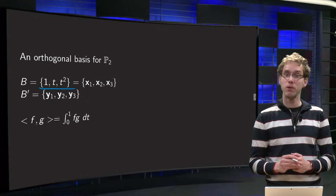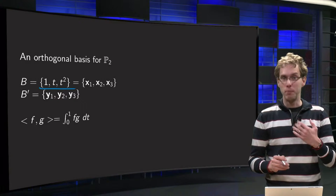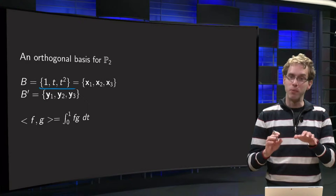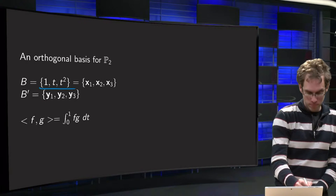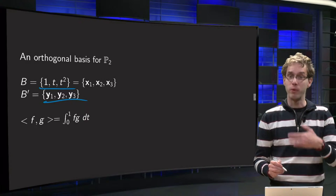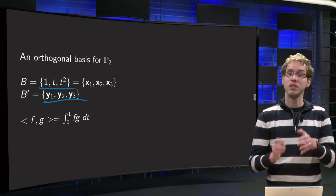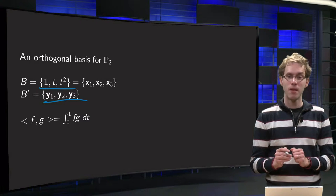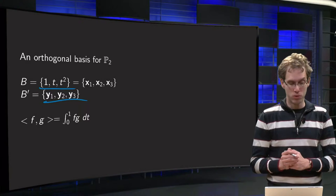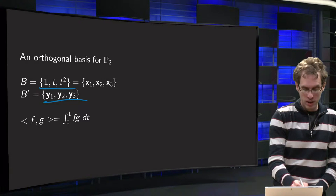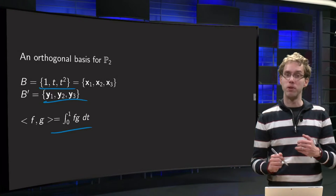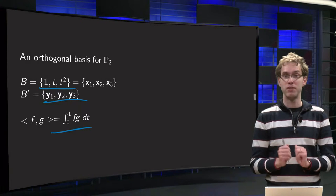We will make an orthogonal basis for p2, so we will start with our standard basis, 1, t, t squared for p2. Let's call them x1, x2, x3, and we will make another basis b' consisting of y1, y2, and y3, which is an orthogonal basis. We need an inner product, and for this example we choose the inner product integral from 0 to 1 of f times g.